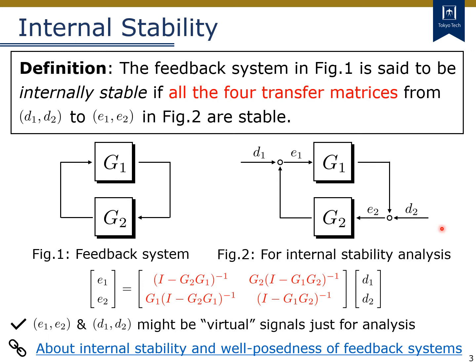Then, the feedback system is said to be internally stable if all four transfer matrices, denoted by red, from D1, D2 to E1, E2 are all stable. For more about the internal stability and well-posedness of feedback systems, please look at the document in this link.